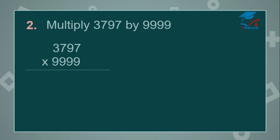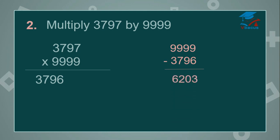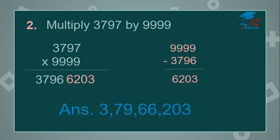So write the first part. What is the predecessor of 3,797? That is 3,796 — this is Part 1. Now subtract 3,796 from 9999. What will be the answer? 6203. So you can write 6203 in the second part. So your answer will become 37,96,6203.